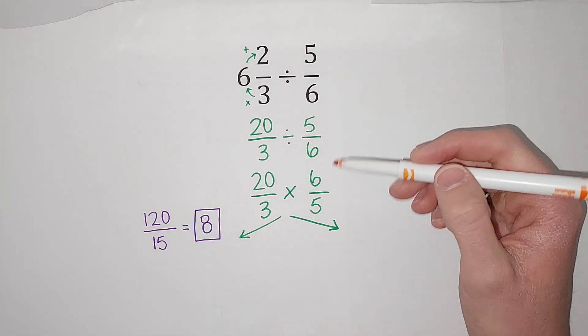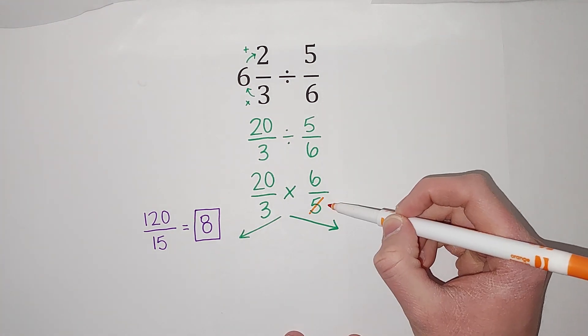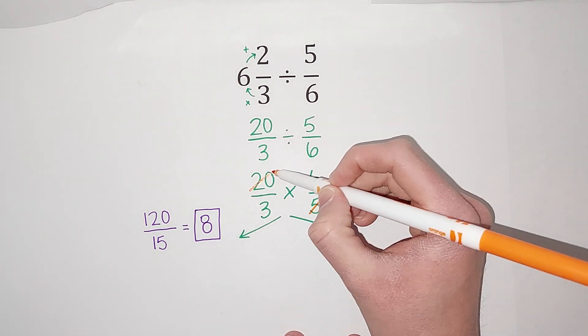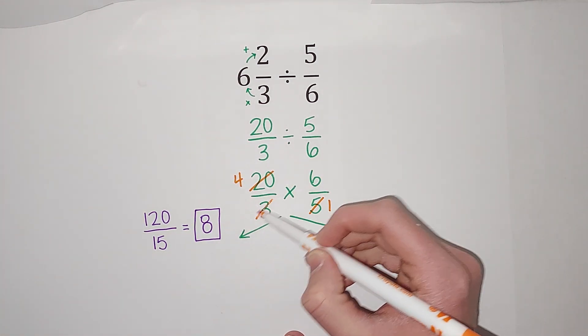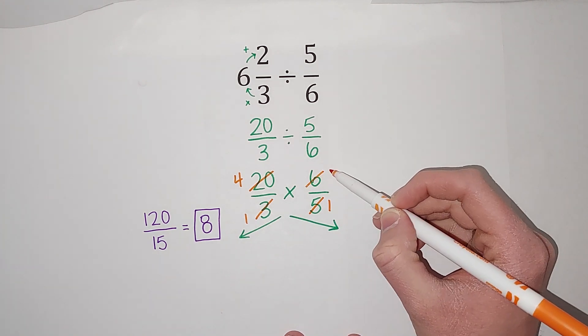This is just when we're multiplying. So I notice, 5 goes into 5 once, 5 goes into 20 four times. And then I notice, 3 goes into 3 once, and it goes into 6 two times.